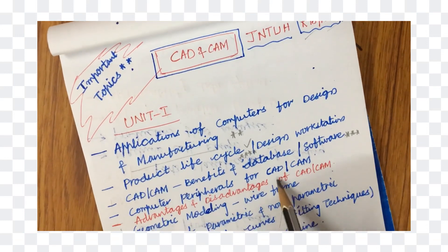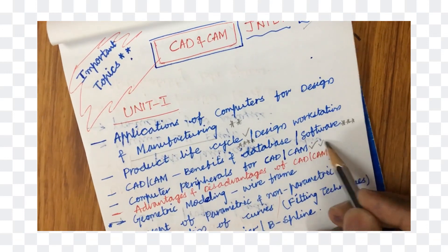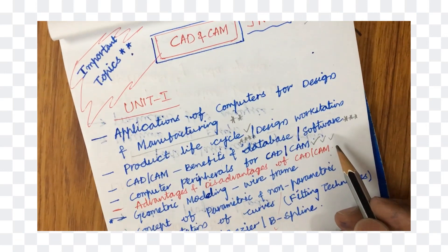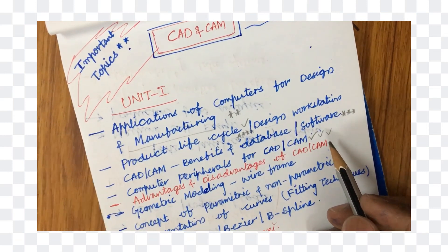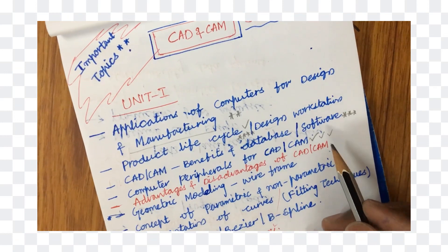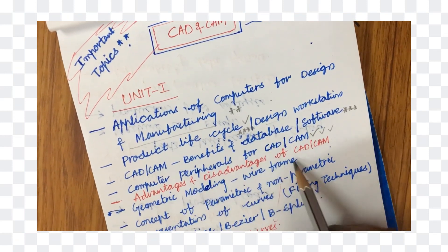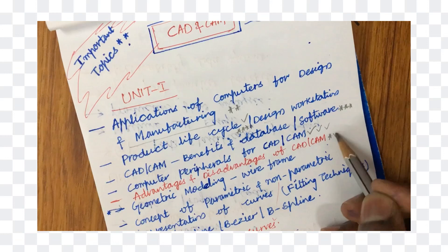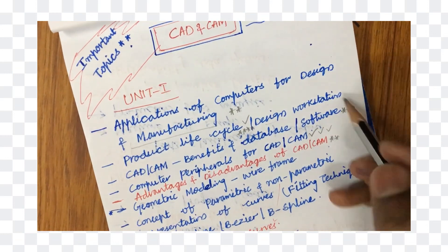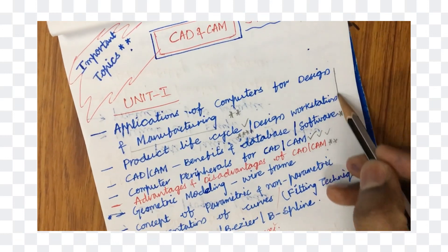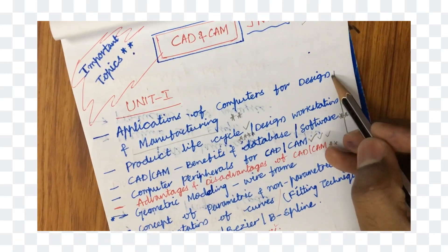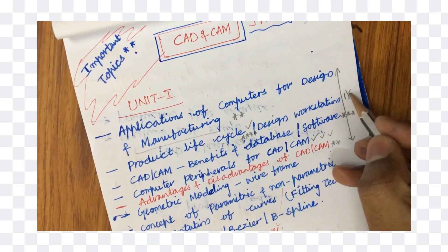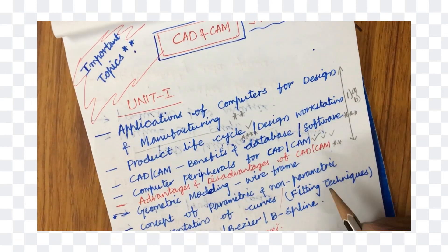Computer peripherals for CAD CAM is also asked several times. Whichever topics I am stressing here, please be particular with those. Advantages and disadvantages of CAD CAM is also one of the 8-mark or 7-mark questions from unit 1, and we can expect one question from this — that may be 1A as well as 1B.